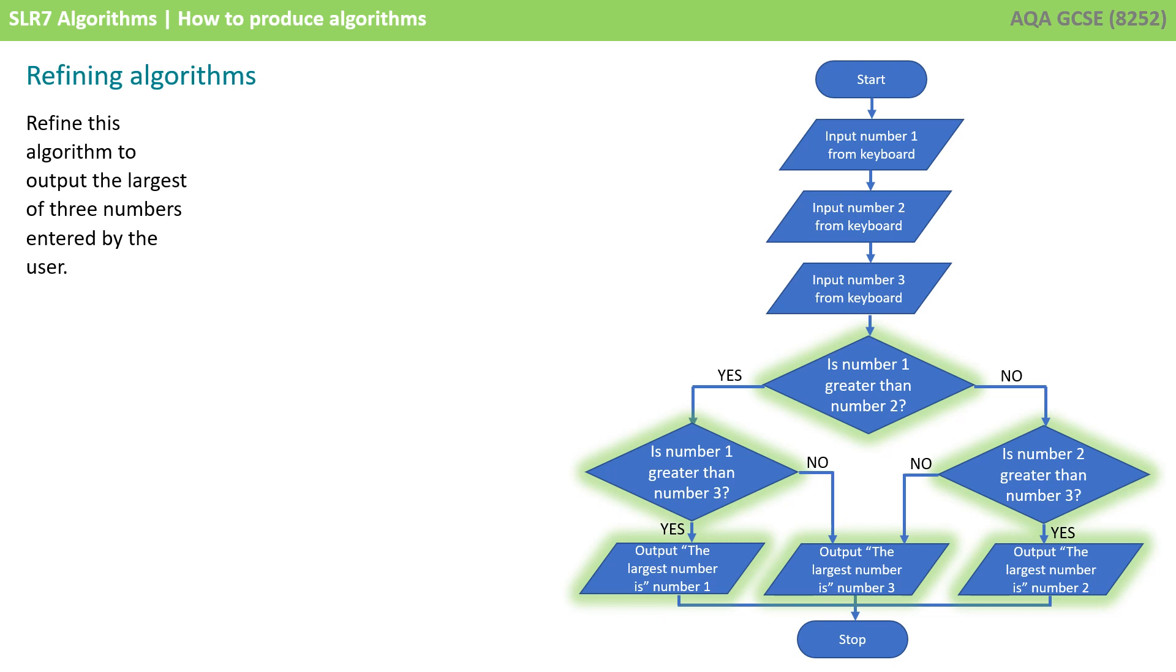And here you can see our refinement. So, we've still got the is number 1 greater than number 2, but then if the answer is yes or no, we're performing another check. And depending on the result of that, we're either outputting number 1, 2 or 3 is the largest.